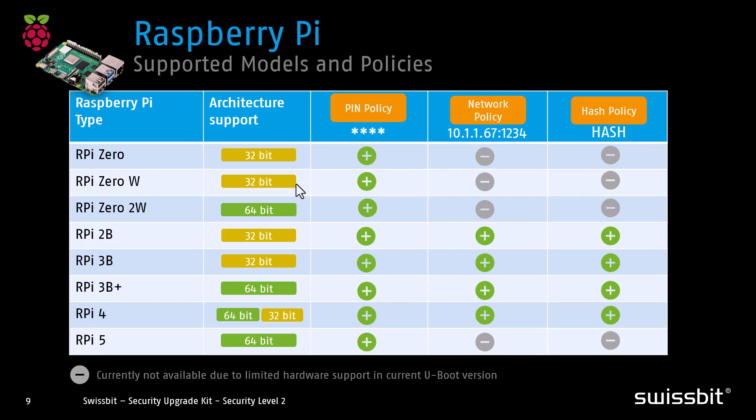Let's take a detailed look at the support matrix for the different Raspberry Pi models and the security policies they support. Our system offers three key security policies: PIN policy — unlock based on a PIN code; hash policy — unlock through system fingerprinting or a hash-based method; and network policy — unlock via a network challenge-response mechanism. All Raspberry Pi models support either 32-bit or 64-bit operating systems. The Raspberry Pi 4 supports both architectures, providing maximum flexibility. The Raspberry Pi 2B, 3B, and 3B+ all support PIN, hash, and network policies, making them highly versatile. The Raspberry Pi 4 also supports all three policies, making it the most adaptable choice.